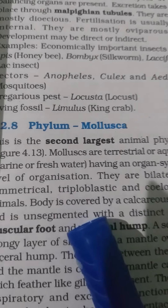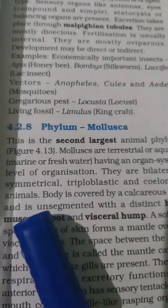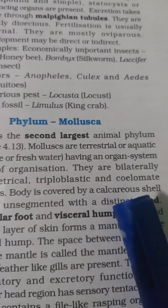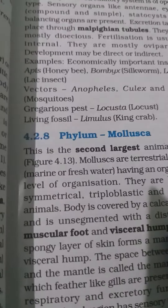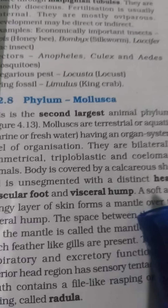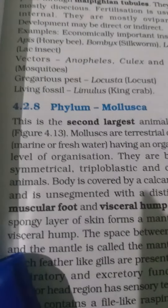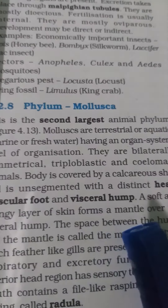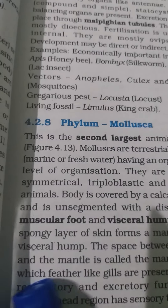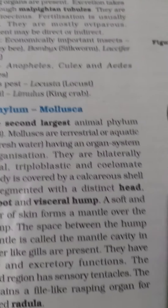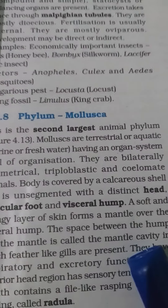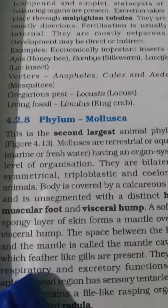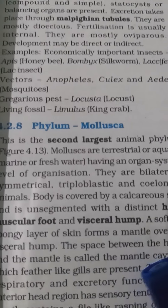The body is bilaterally symmetrical, triploblastic, and coelomate. The body is covered with a calcareous shell — snail is an example. The head, muscular foot, and visceral hump are visible, and a soft spongy layer of skin forms the mantle over the visceral hump. The space between the hump and the mantle is called the mantle cavity.